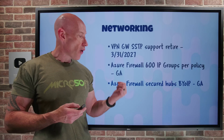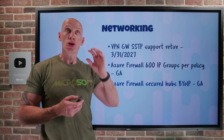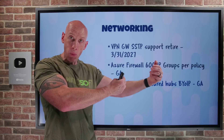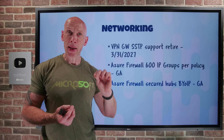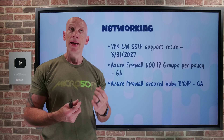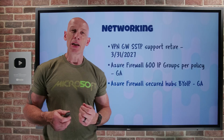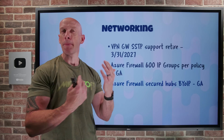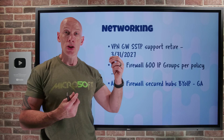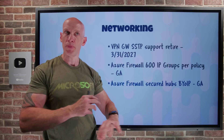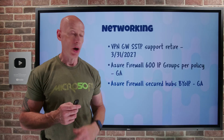For Azure Firewall Secured Hub — so Azure Virtual WAN with a secured hub using Azure Firewall — you can now bring your own IP address. The public IP address it uses can now come from a prefix you own in Azure. That's useful where you've already got an allow list in place and you want consistent IP address usage for other systems based on their policies. You can now bring your own.